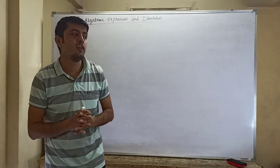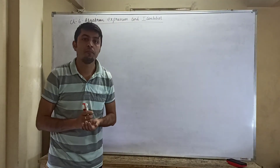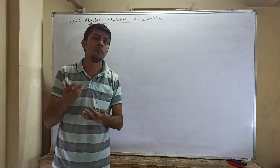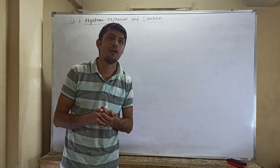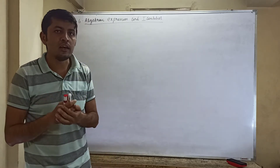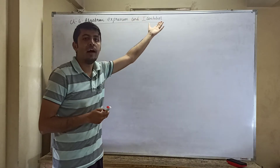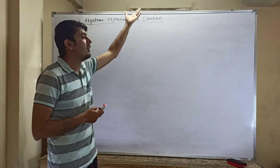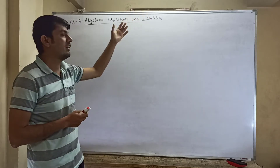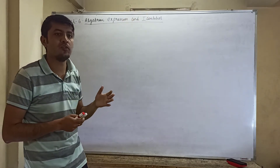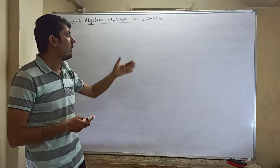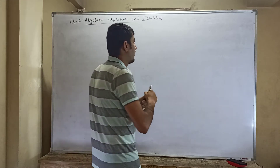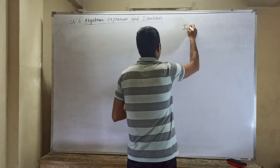Hello everyone. In my last video we did some problems related to algebraic expressions — we learned how to multiply, add, subtract, and divide. Today in this video we'll be learning about identities. When it comes to identities, we'll be discussing certain formulas that you have also done in your previous classes, including class 7. So let us go through the identities and write down the formulas.